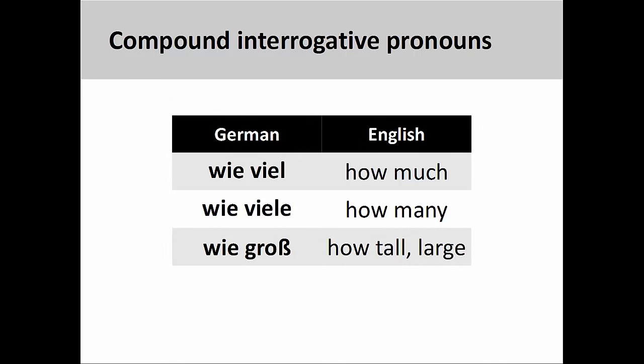Interrogative pronouns can also inquire about the quantity, number, and characteristics of a noun. 'Wie viel' (how much), 'wie viele' (how many), and 'wie groß' (how tall, large). These interrogative pronouns, as you see on the screen, usually appear in compound forms.